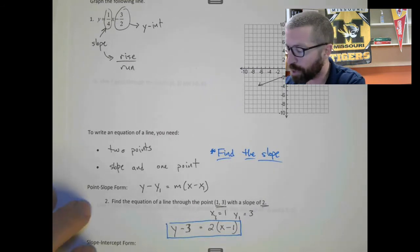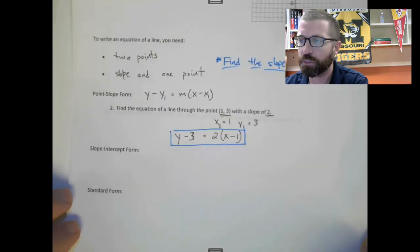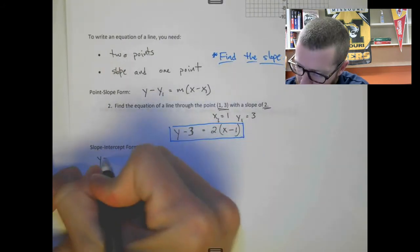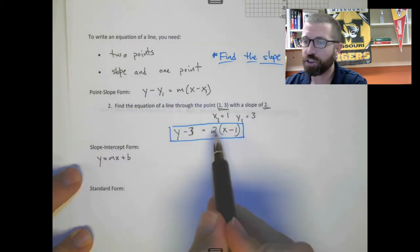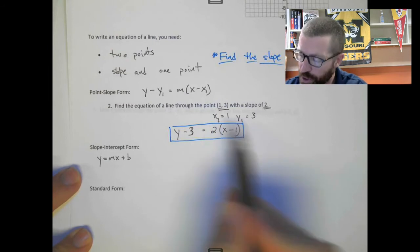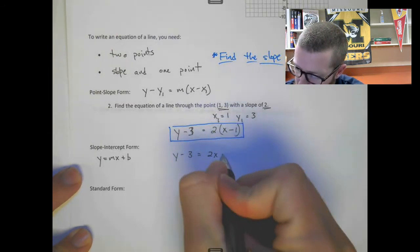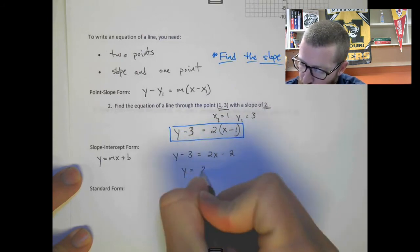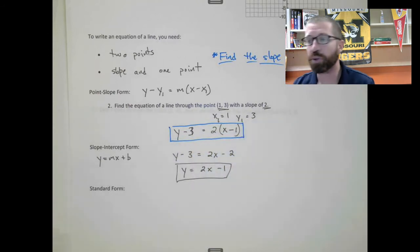Slope-intercept form is maybe the most popular. Slope-intercept form is y = mx + b. Let's change this to slope-intercept form by distributing: 2(x minus 1) gives 2x minus 2, then add 3. So y = 2x minus 1. Now we have slope-intercept form.